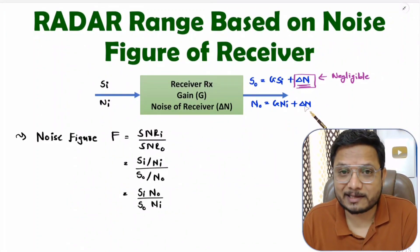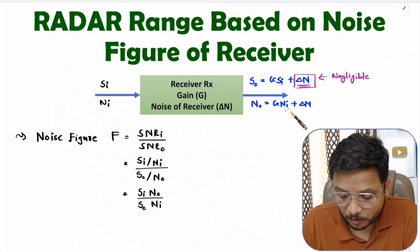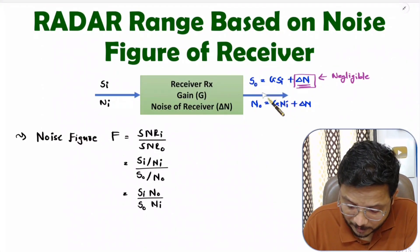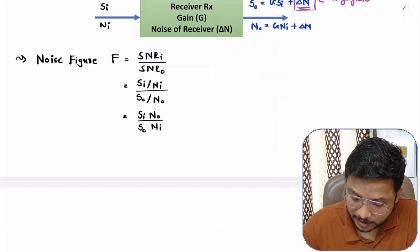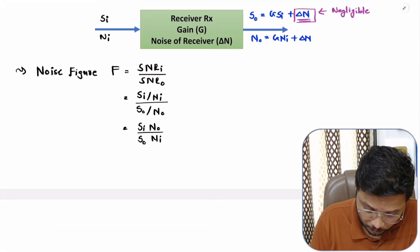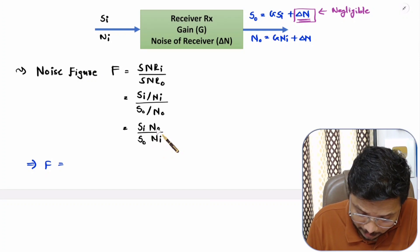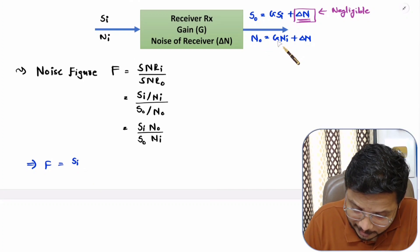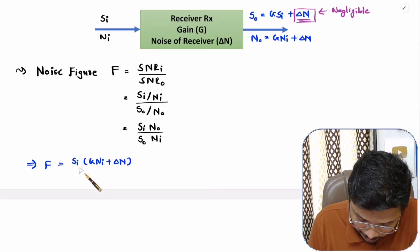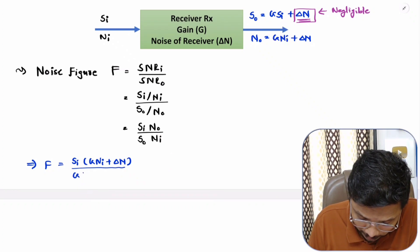While delta_n is not negligible in the noise term because delta_n is comparable to G × Ni. Now we place these values into the noise figure equation. Noise figure F equals Si × N0, where N0 is G × Ni plus delta_n, and S0 is G × Si, with Ni remaining as is.